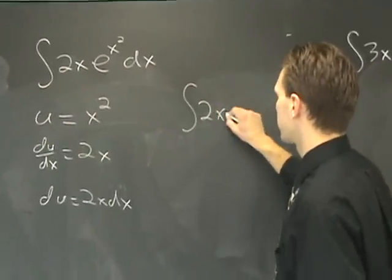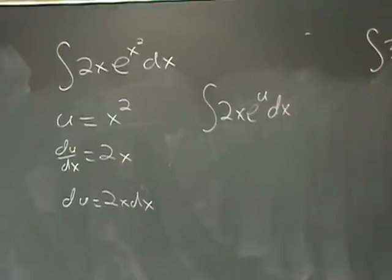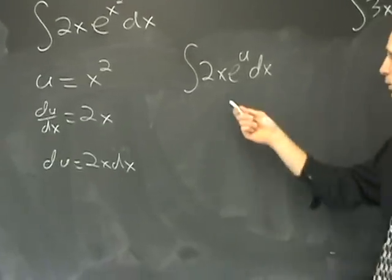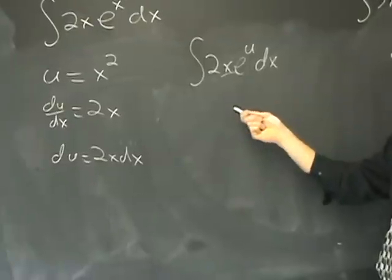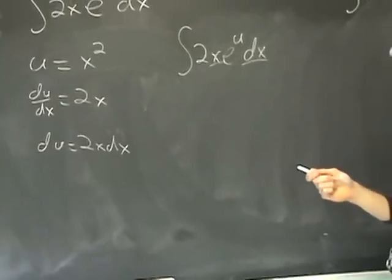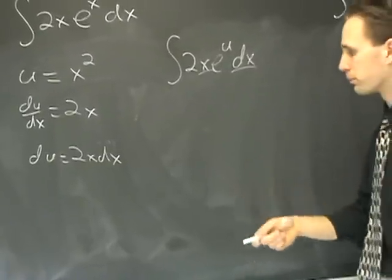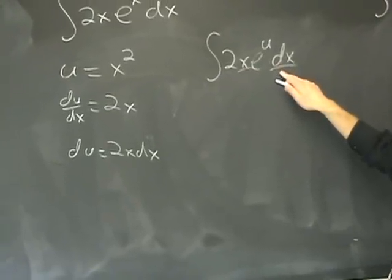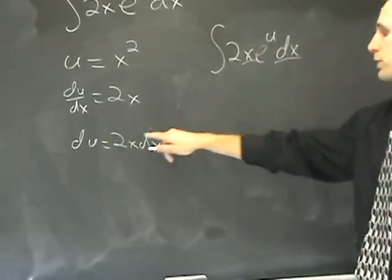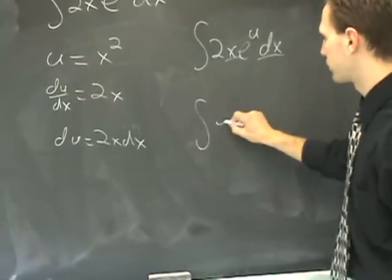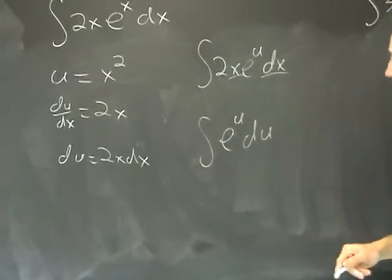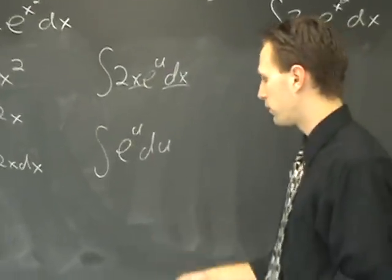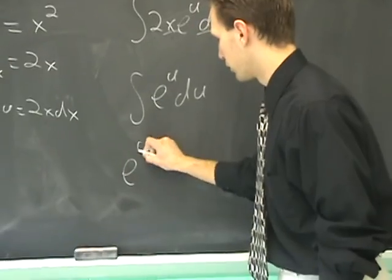That would be the integral of 2x e to the u dx. Since the goal is to eliminate all the x's and rewrite them in terms of u, you see here x has to go, and you have to replace dx as well. Can you do that with your chosen substitution? 2x dx is here — it's plain that I can trade in 2x dx for just du, and have e to the u du in the end. This is a lot easier to evaluate than the original. To carry out this integration, you just get e to the u plus c.